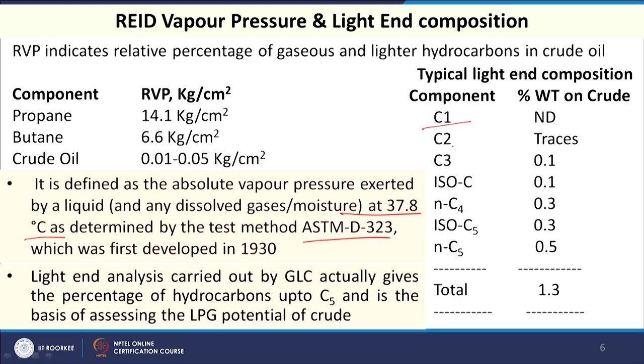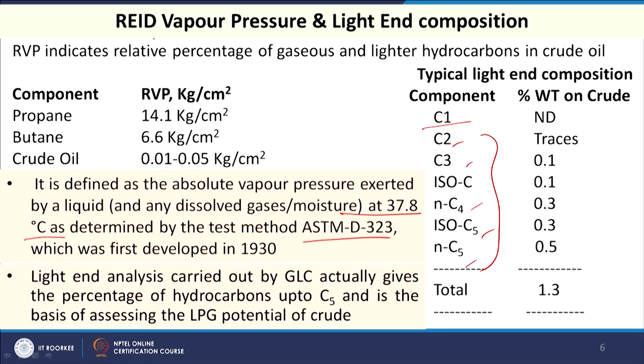In petroleum crude we get hydrocarbons from C2 to C80 or more. C2, C3, C4, and C5 fractions produce LPG, and how much LPG we can get from a crude is indicated by the Reid vapor pressure. For example, vapor pressure of propane is 14.1 kg/cm², butane is 6.6 kg/cm², whereas for crude oil it is 0.01 to 0.05 kg/cm².